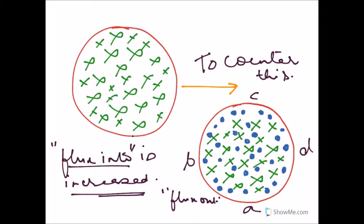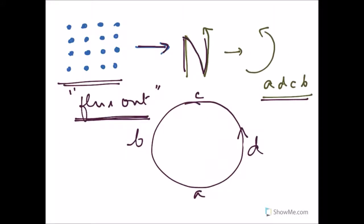Now since flux into is increased, to counter this there has to be flux out through the coil. A flux out, as we had seen earlier, can be induced if there is a north polarity in the coil.